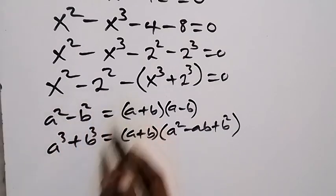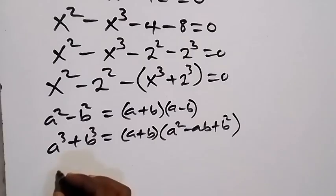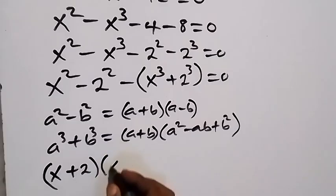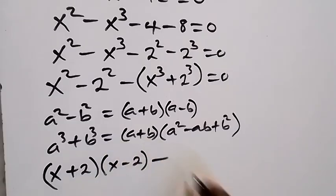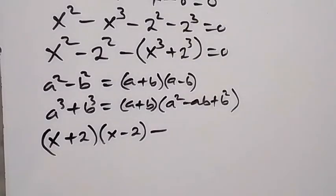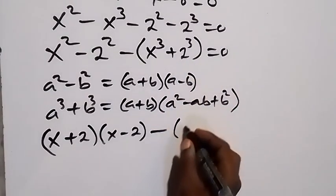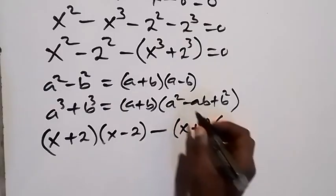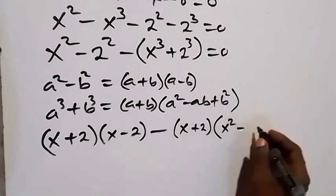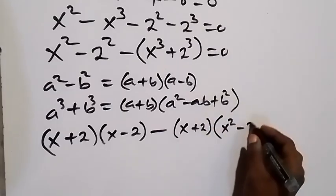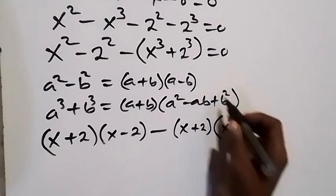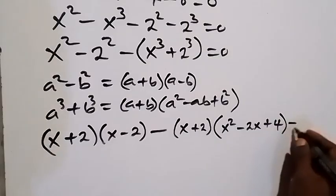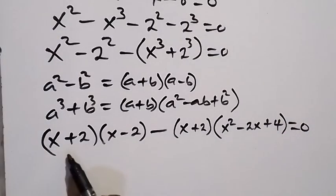Applying these identities: for x squared minus 2 squared, this becomes (x + 2)(x − 2). Then for x cubed plus 2 cubed, we get (x + 2) times (x squared minus 2x plus 2 squared), which is (x + 2)(x squared minus 2x plus 4). So we have (x + 2)(x − 2) minus (x + 2)(x squared minus 2x + 4) equals zero.